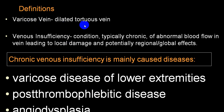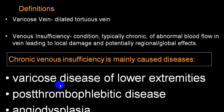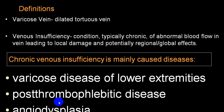Varicose veins are dilated tortuous veins, while venous insufficiency is a condition of chronic abnormal blood flow in a vein leading to local damage and potential regional or global effects — we always call it chronic venous insufficiency. Varicose vein of the lower extremity, post-thrombotic venous involvement, and angiodysplasia can all lead to chronic venous insufficiency.